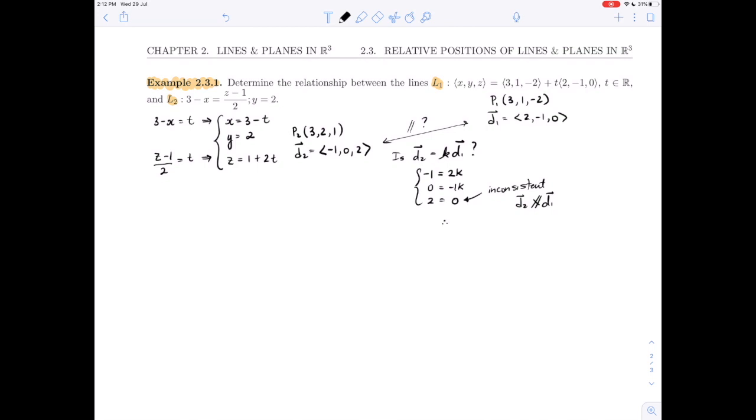Which tells us that we are not dealing with parallel or coincident lines. Our lines must be either skew or intersecting. And so the next test that we have to do is whether the lines are coplanar or not. So we are going to examine the triple scalar product.